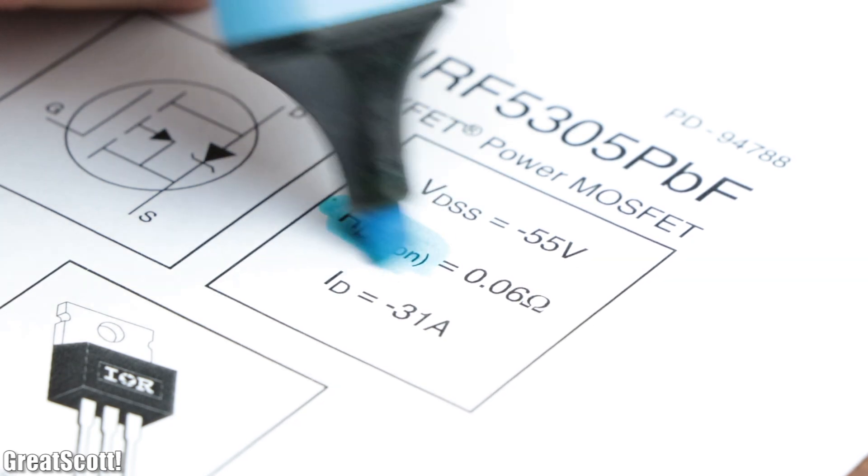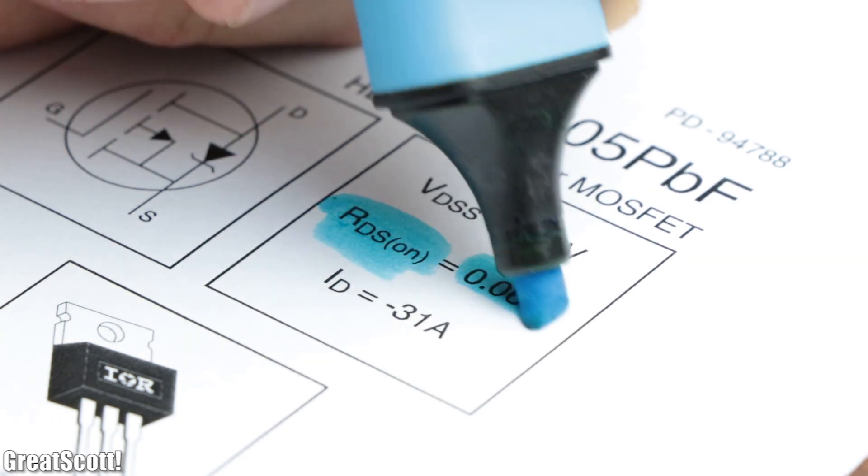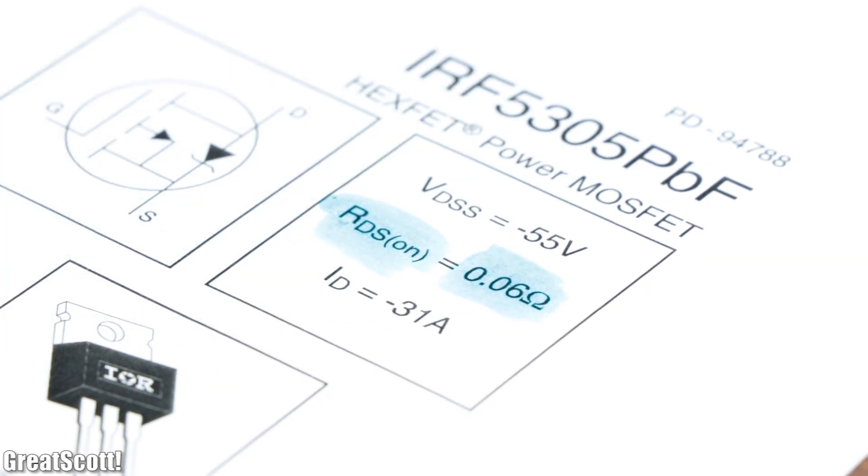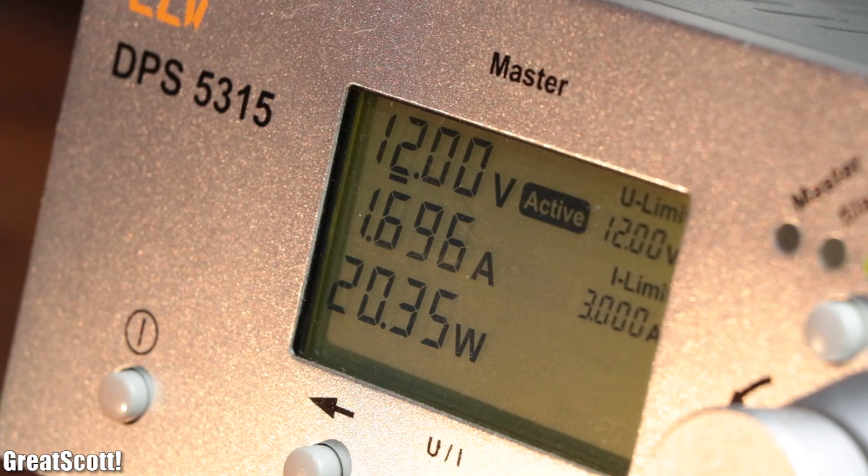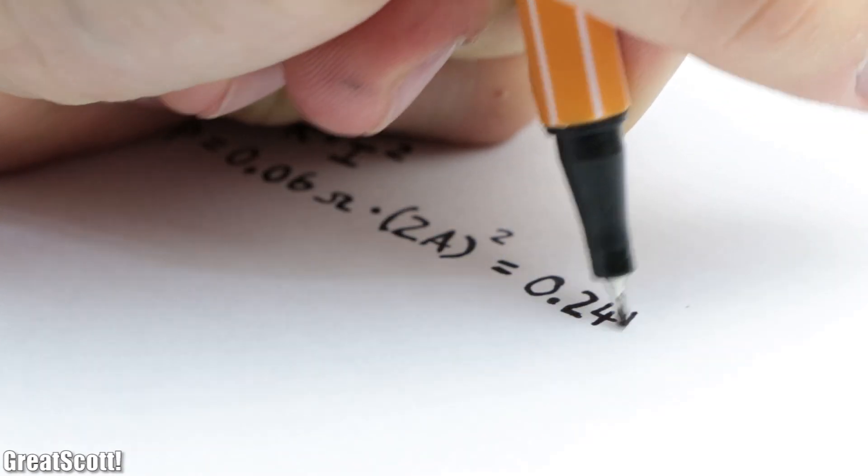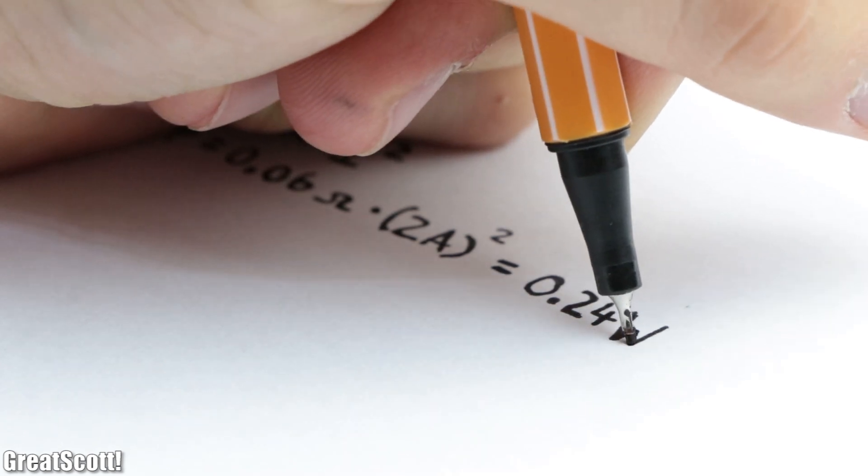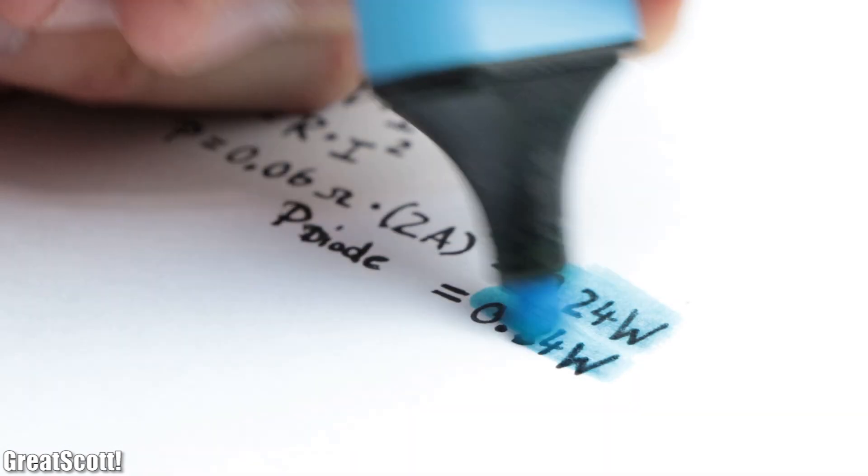In this state, the MOSFET can reach a resistance of 0.06 ohms, which at a current draw of theoretical 2 amps would equal a power loss of 0.24 watts, much better than the diode.